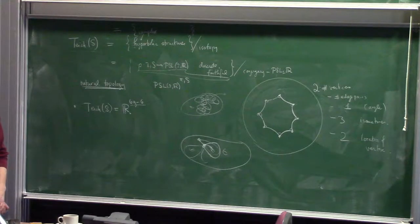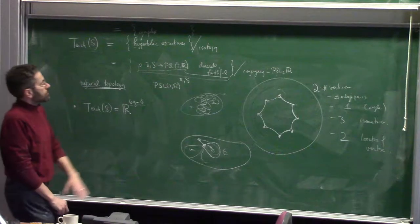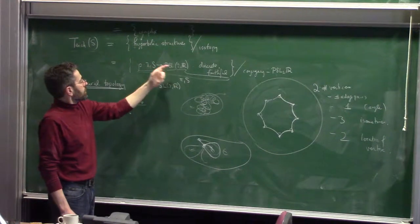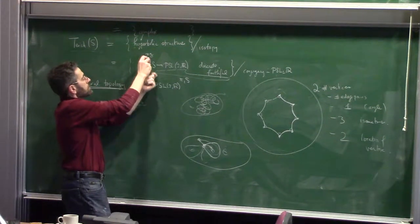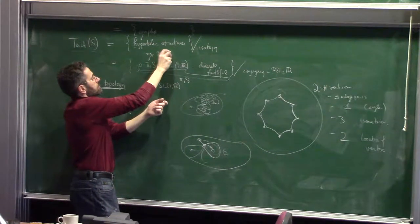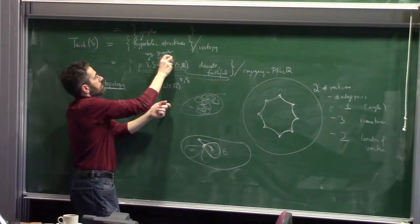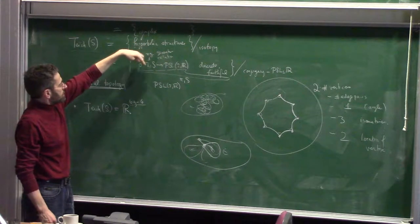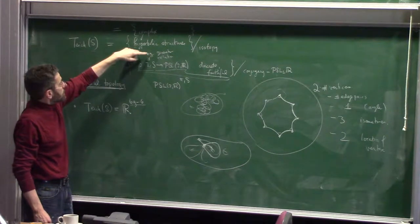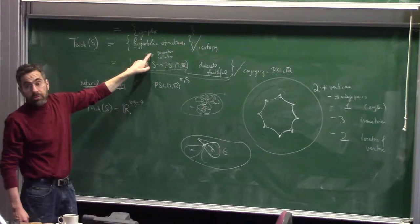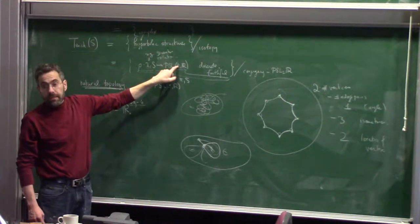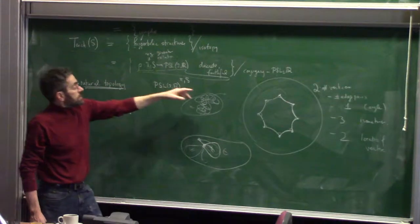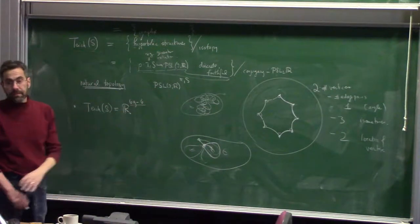Another way to get the dimension: think about how many ways there are to map the surface group into PSL(2,R). There are 2g generators for this surface group and one relation — the product of commutators. Each generator can go anywhere in PSL(2,R), which is 3-dimensional, so that's 3 × 2g = 6g. Subtract one relation, which costs 3 dimensions: 6g − 3. Then subtract the conjugacy, which is another 3. That gives 6g − 6. This argument actually gives you the number directly.